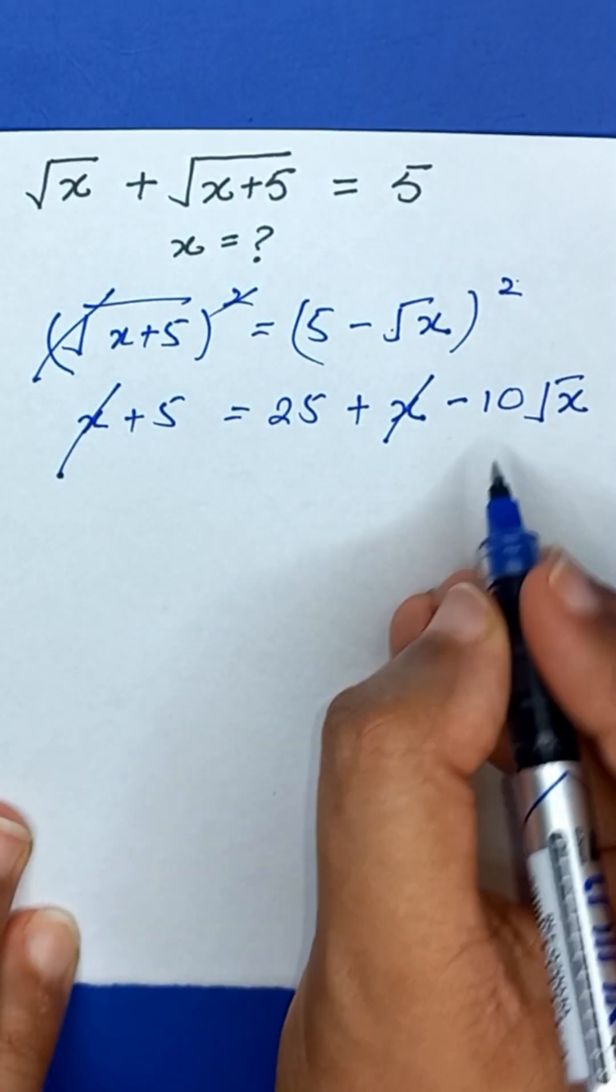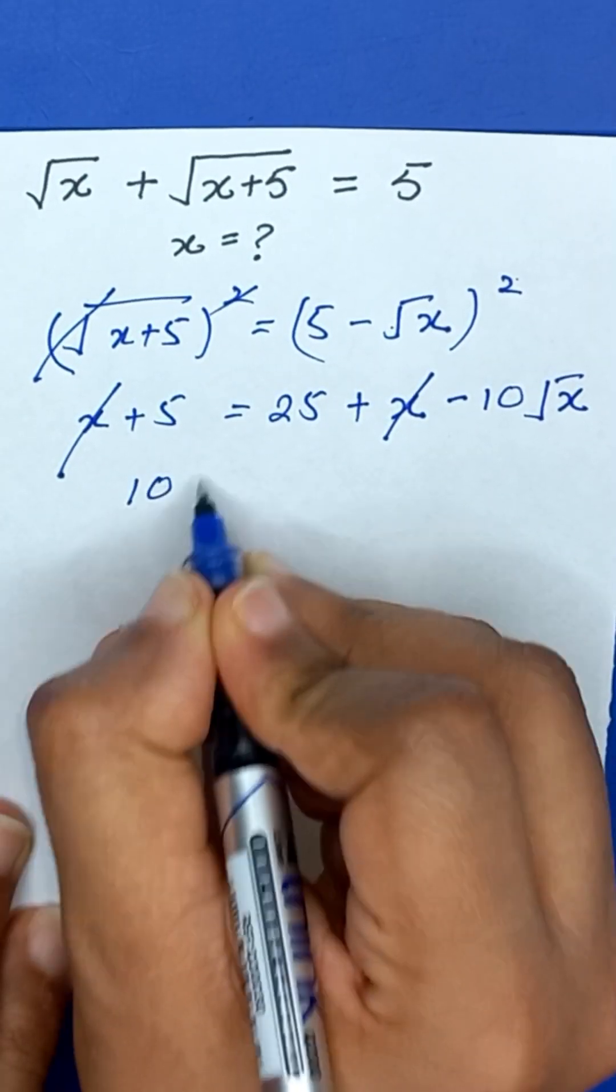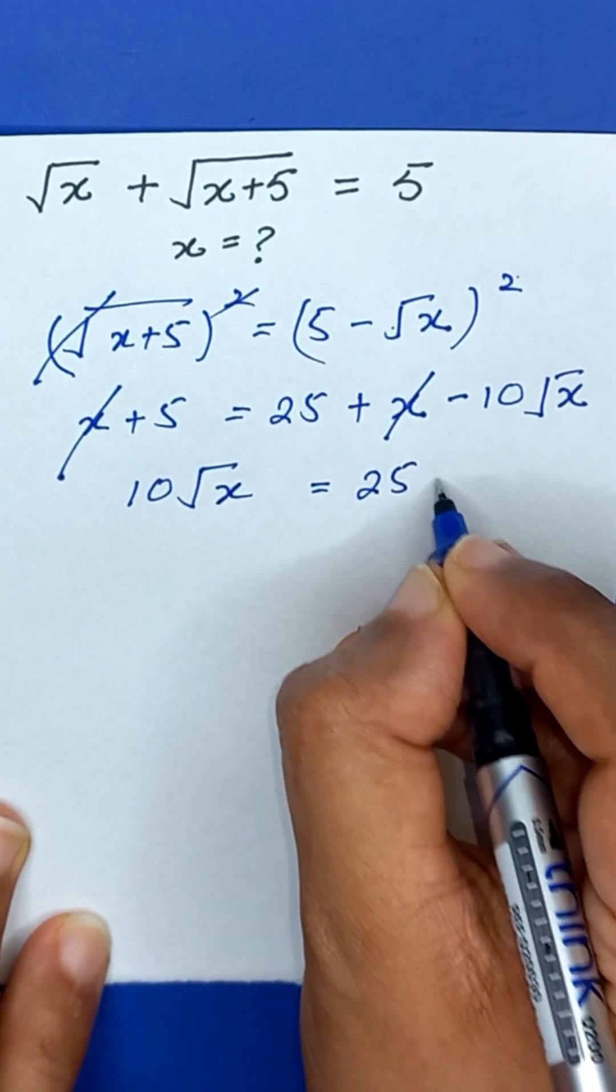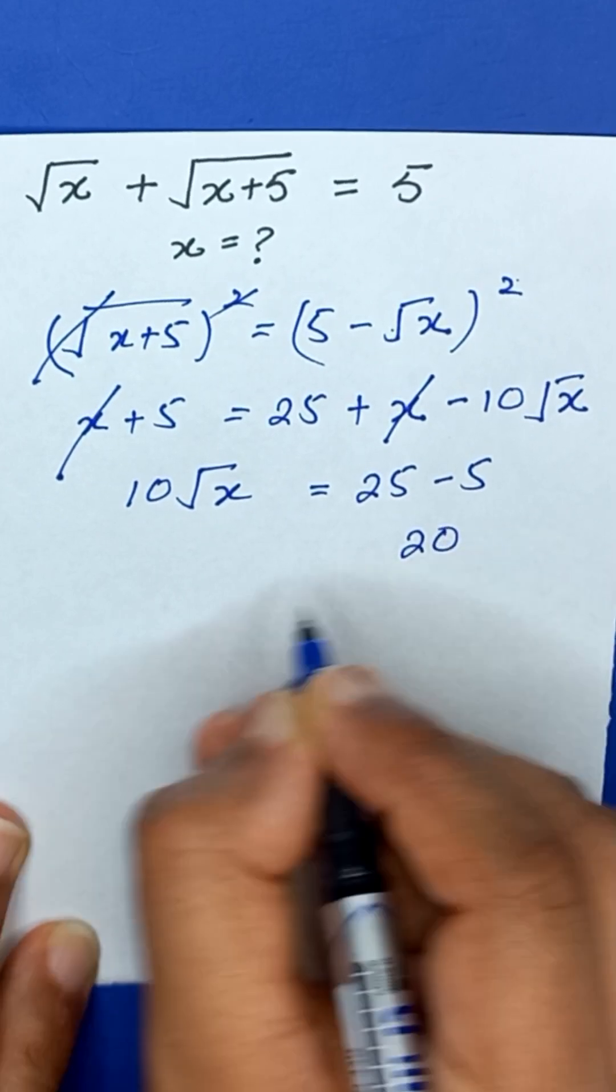This x and x will be cancelled out and it will become 10 square root of x is equal to—we will take this 5 to the right hand side—so it will be 25 minus 5, which equals 20.